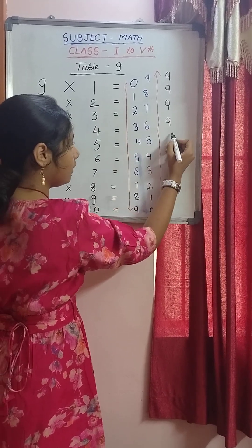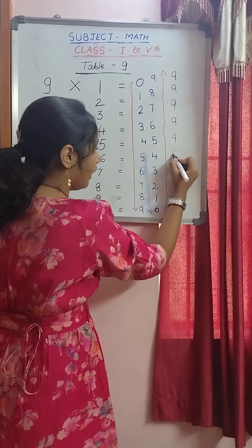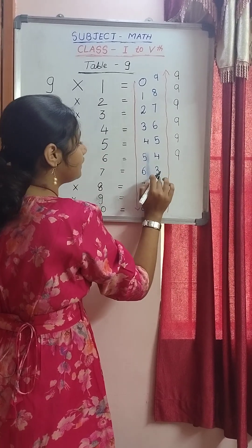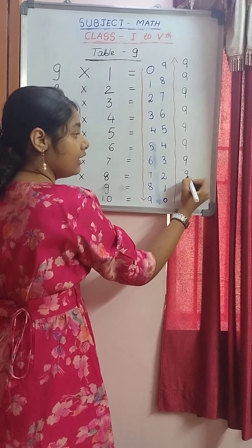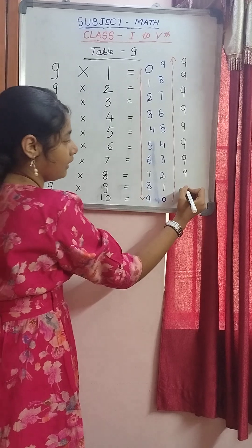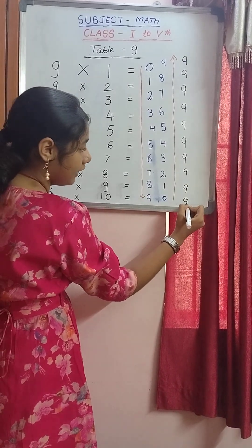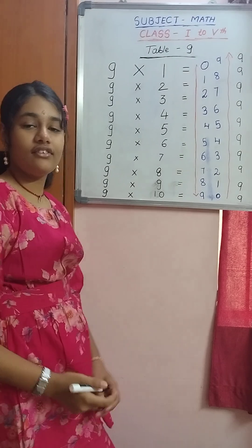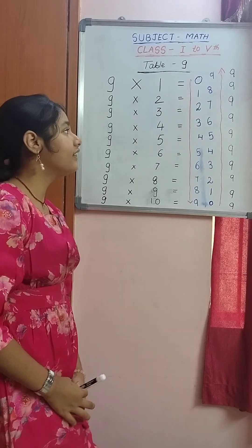7 plus 2 equals 9, 8 plus 1 equals 9 and 9 plus 0 equals 9. This is really interesting and a convenient mode of explanation for the table of 9. Thank you.